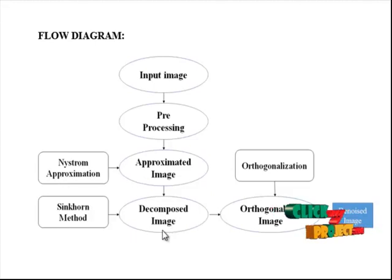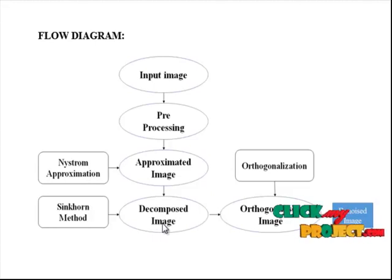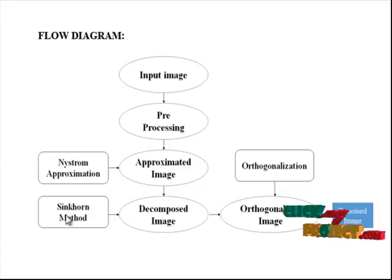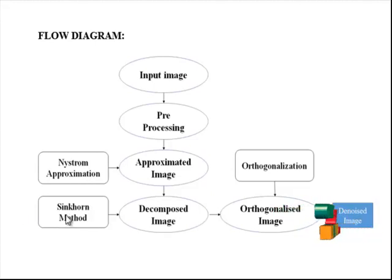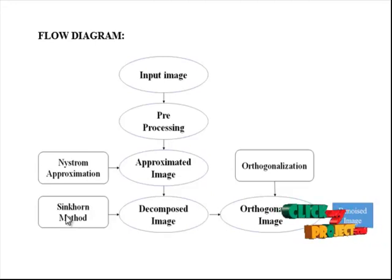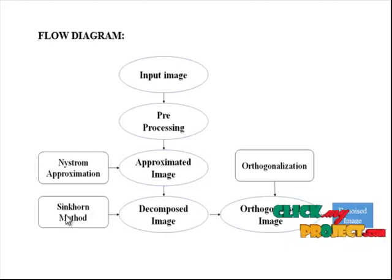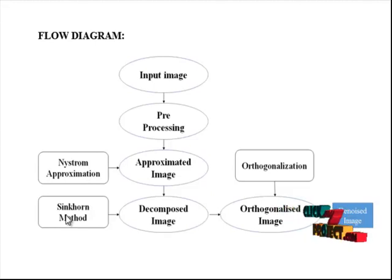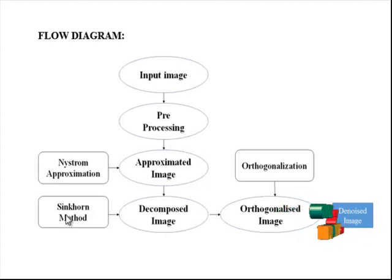Next, in the decomposed image step, the approximated images are decomposed with the help of the Sinkhorn method. The Sinkhorn theorem states that every square matrix with positive entries can be written in a certain standard form. The Sinkhorn algorithm can then be used to balance the matrix — that is, to find a diagonal scaling D1·A·D2 that is doubly stochastic. It is known that the convergence is linear, and an upper bound has been given for the rate of convergence for positive matrices.